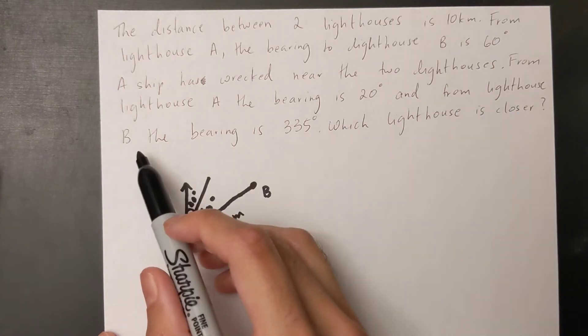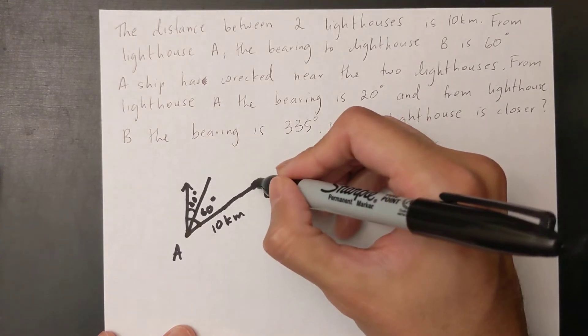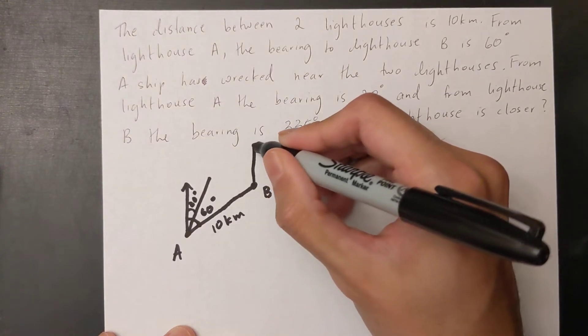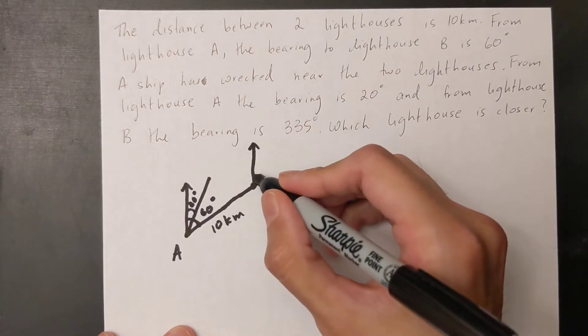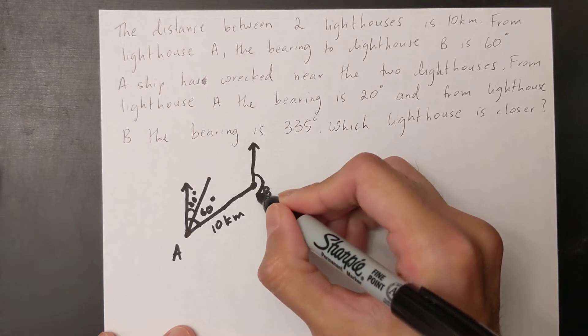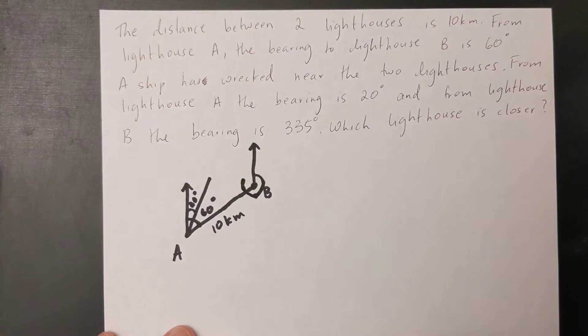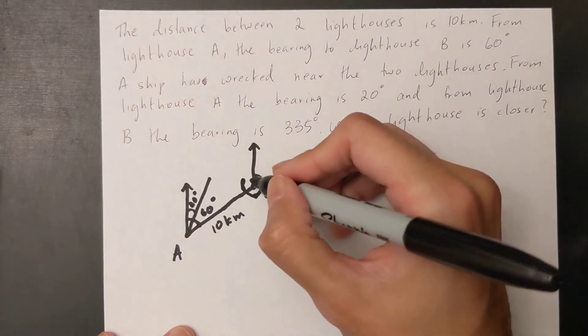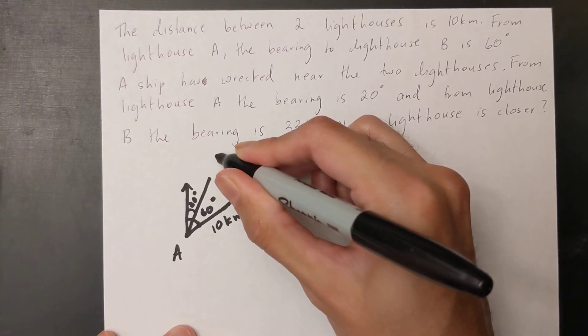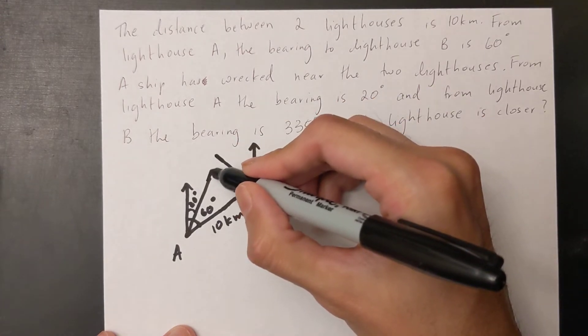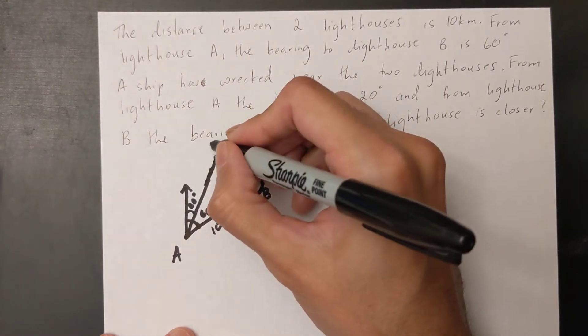From lighthouse B the bearing is 335 degrees. So again I'm going to draw my arrow going towards north and I have to draw an angle of 335 degrees. So 90, 180, 270, and 335 is somewhere approximately here. Now I can draw my line going across over there and then I can extend this line and connect it at that point. And here is where my ship is.